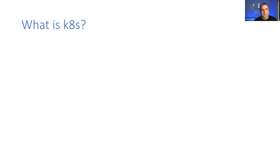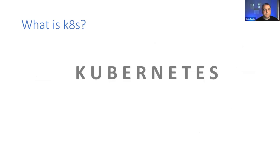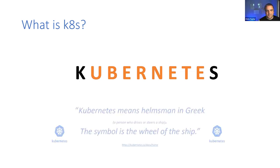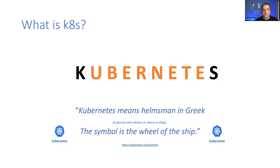A lot of people may have heard of K8s and wondered if it's different from Kubernetes. It's not — it's the same thing. Someone decided to take the eight letters between the K and the S and turn it into K8s. Fun fact: Kubernetes means helmsman in Greek — the person who drives or steers a ship — and you can see that in the Kubernetes logo, which is the wheel of a ship.